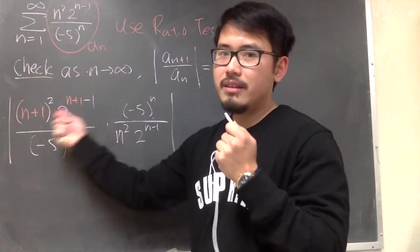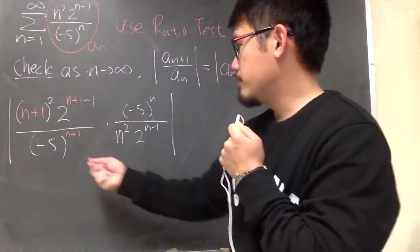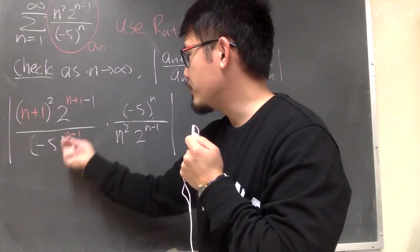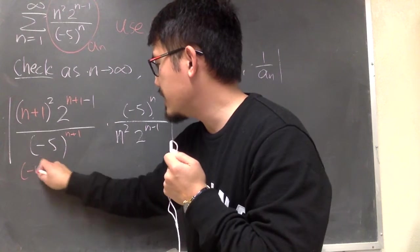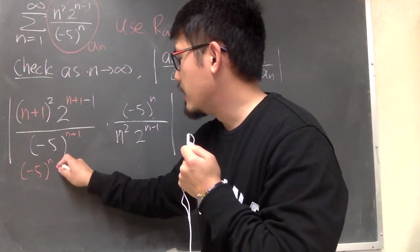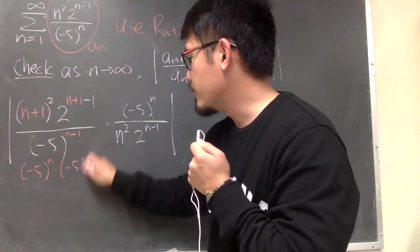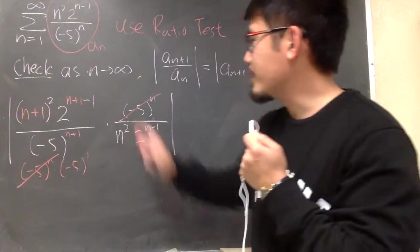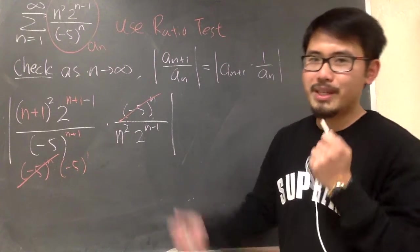Let's simplify this part first. This is negative 5 to the n plus 1 power, which is the same as negative 5 to the nth power, times negative 5 to the first power. And when you break them apart, you see this. And that will cancel. Okay, so we are making progress.